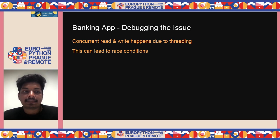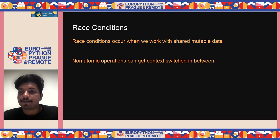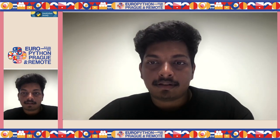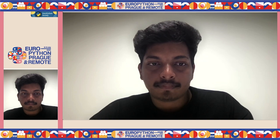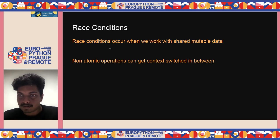This is what happens with concurrent reads and writes using threading — it leads to race conditions. Race conditions occur when working with shared mutable data. Since threads share the same memory under the same process, without any technology restricting access to one thread at a time, one thread mutates data and another does the same, causing completely different and incorrect results.